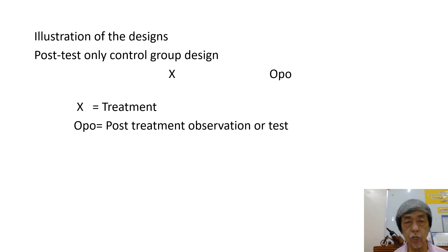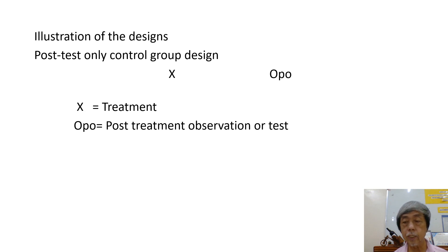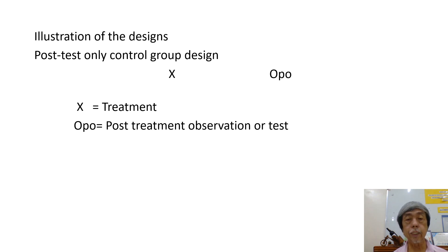The illustration for the post-test only control group design is now shown. We have X and OPO — where X is the treatment and OPO is the post-treatment observation or test.